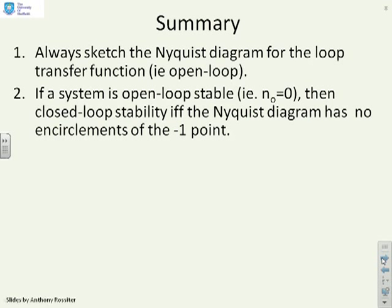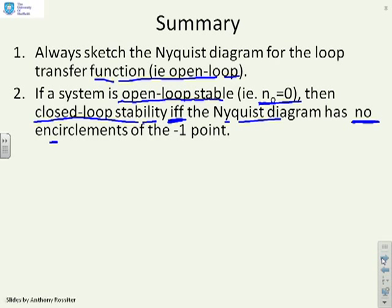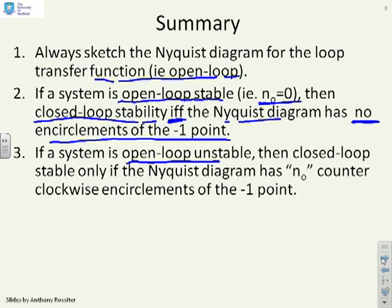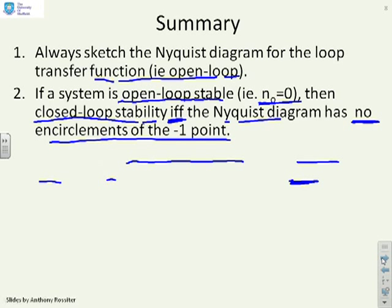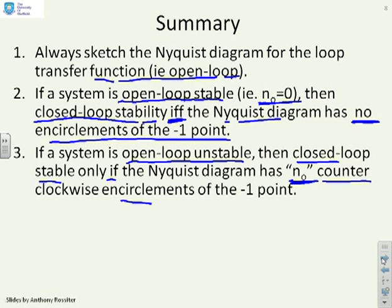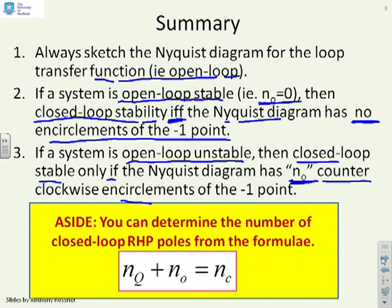Summary: you should always sketch the Nyquist diagram for the loop transfer function, i.e. open-loop. If the system is open-loop stable — no right-half-plane open-loop poles — then you are closed-loop stable if and only if the Nyquist diagram has no encirclements of the minus-1 point. That's the most common scenario. If a system is open-loop unstable, you're closed-loop stable if and only if the Nyquist diagram has N0 counter-clockwise encirclements of minus-1. The number of closed-loop right-half-plane poles can be found from Nc equals Nq plus N0.